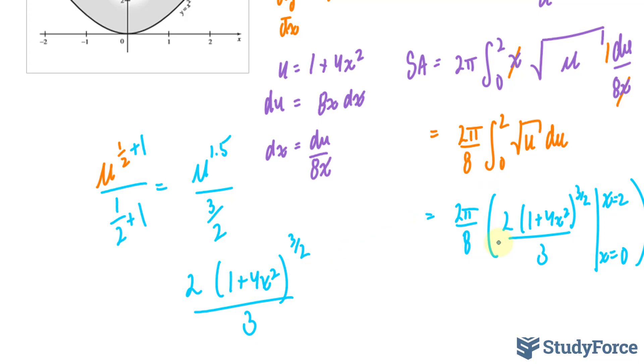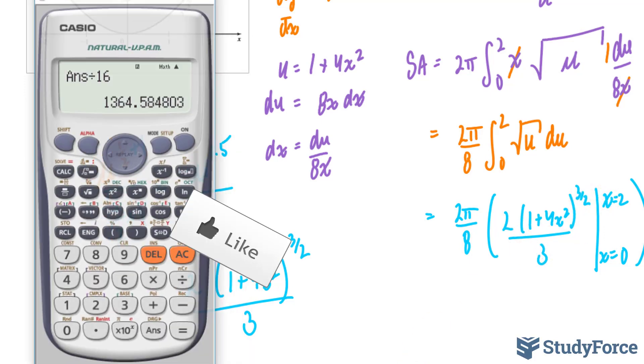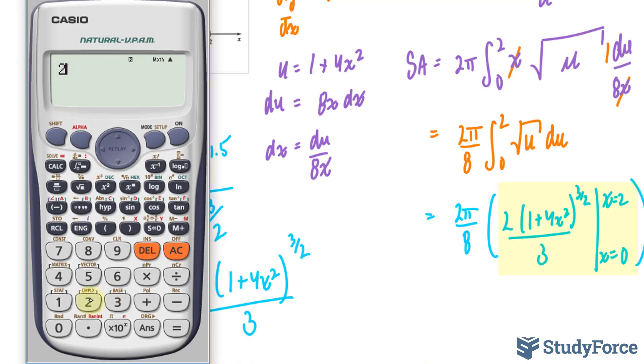Subtract it and that will give us our surface area. Let's find out what the answer to this is when x equals 2. We get 2 bracket 1 plus 4 bracket 2 to the power of 2 to the power of 1.5, divided by 3, we get 46.72.